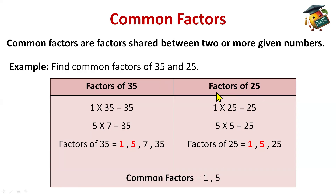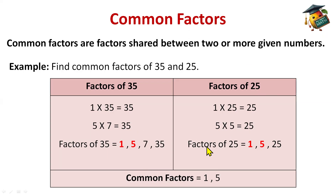Now factors of 25: 1 × 25 = 25. 2 table: no. 3: no. 4: no. 5: yes — 5 × 5 = 25. We stop here because the numbers repeat. Factors of 25 are 1, 5, and 25. Now for common factors — we look at what is common between the two. The common ones are 1 and 5. So the common factors of 35 and 25 are 1 and 5. This way you can find common factors easily — find the factors of both numbers and identify what's common. If they ask for common factors of 3 numbers, do the same with 3 columns.